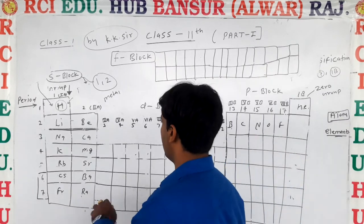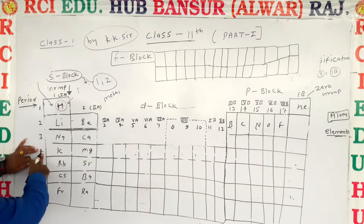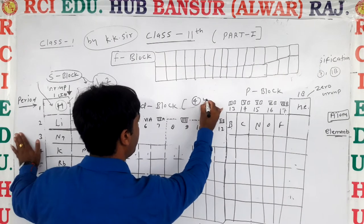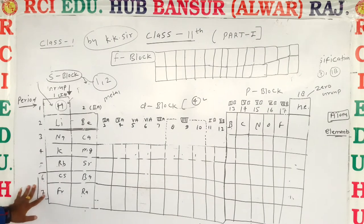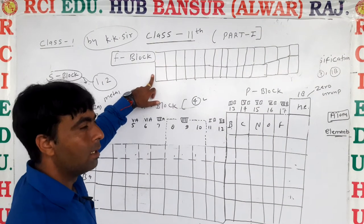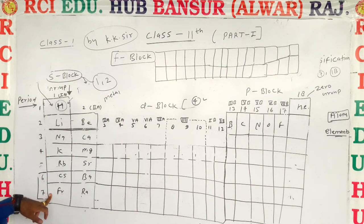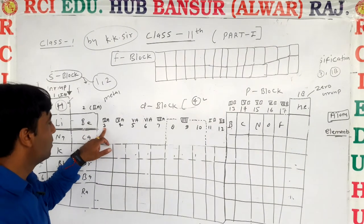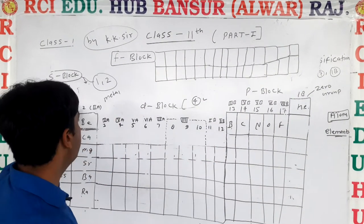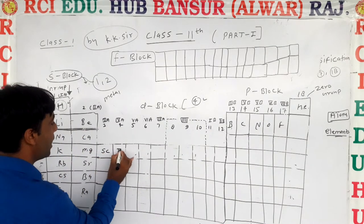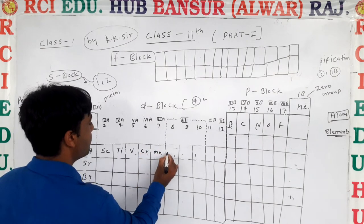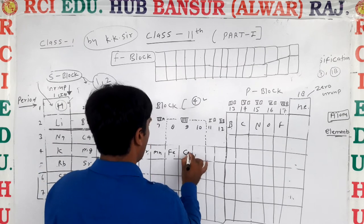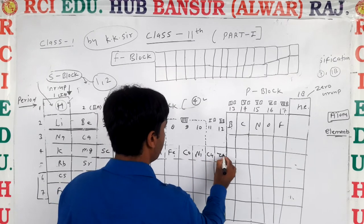After S block, we see D block elements. D block starts from period 4 — periods 4, 5, 6, and 7. D block has a total of 4 periods, and F block elements are attached with periods 6 and 7. Groups 3 to 12 come in D block. The elements are: Scandium, Titanium, Vanadium, Chromium, Manganese, Iron, Cobalt, Nickel, Copper, and Zinc.